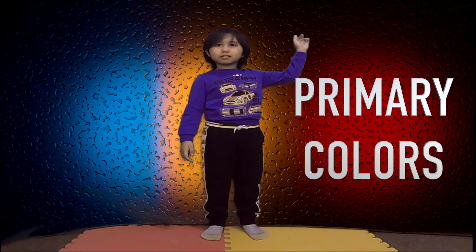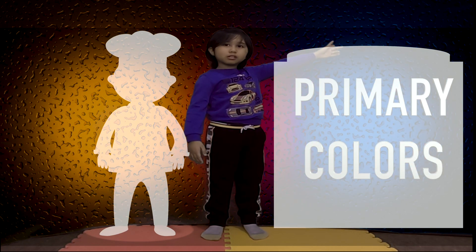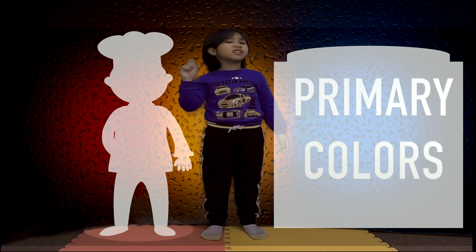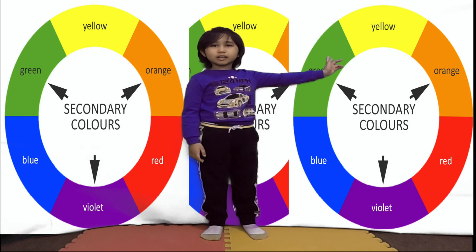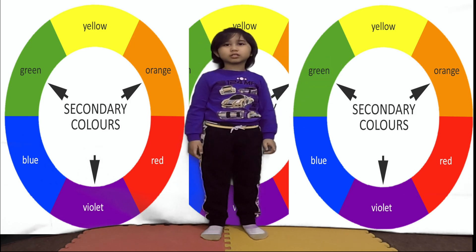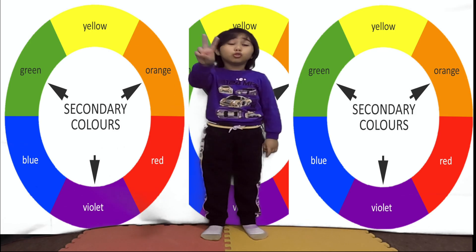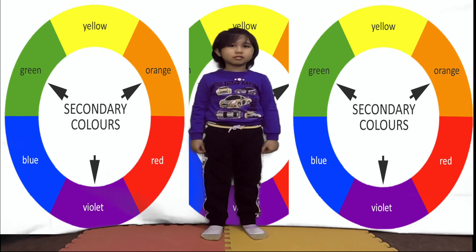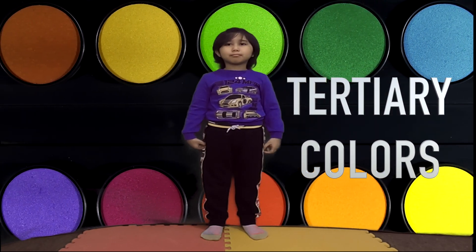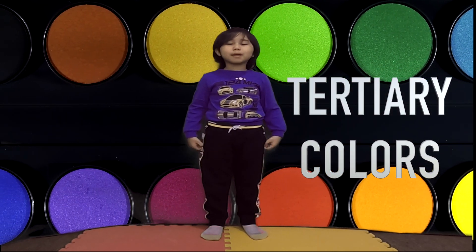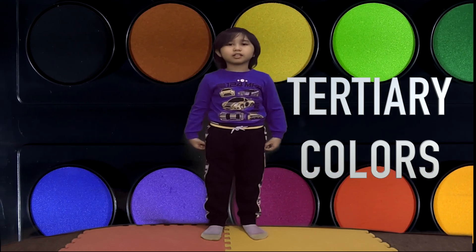So let's learn the types of colors. Primary colors are colors that cannot be created by mixing other colors. Secondary colors consist of two primary colors mixed together. Tertiary colors are made by mixing a primary color with a secondary color.